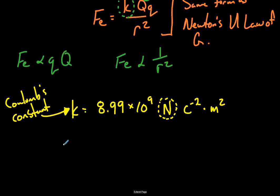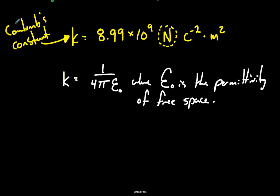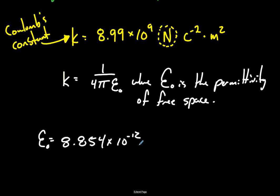K is also defined by the properties of the universe itself. It's 1 over 4π times ε-naught, where ε-naught is the permittivity of free space, which has the value 8.854 times 10 to the negative 12.